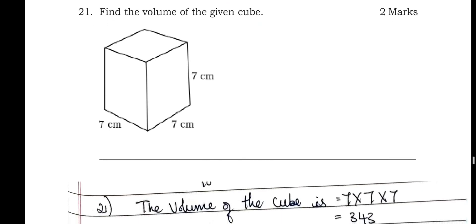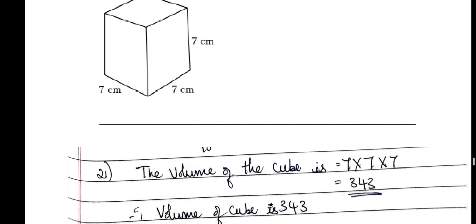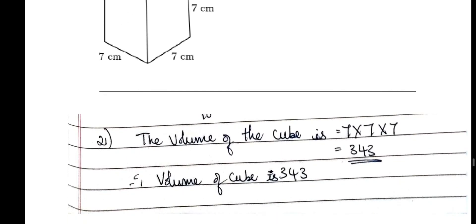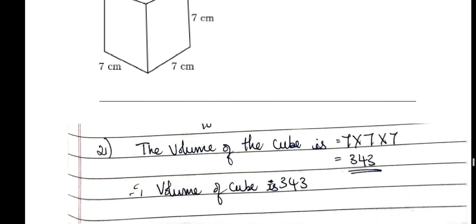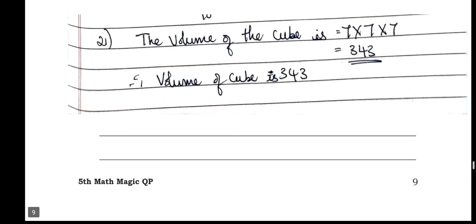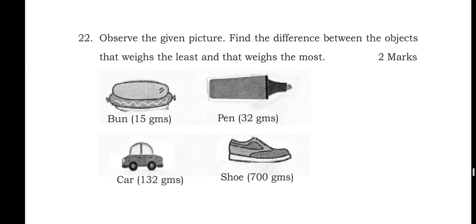Find the volume of the given cube. Each side is 7 centimeters. Volume = 7 × 7 × 7 = 343. The volume of the cube is 343 cubic centimeters.